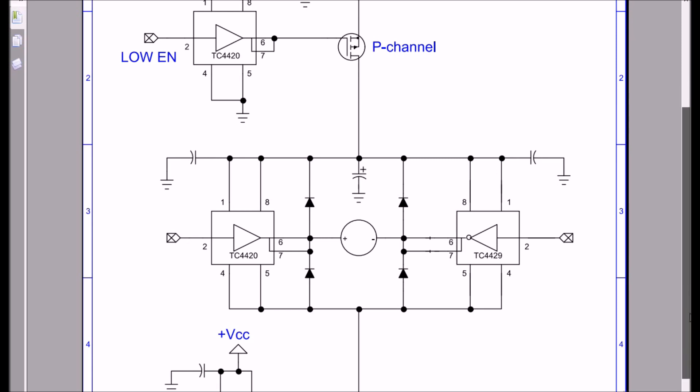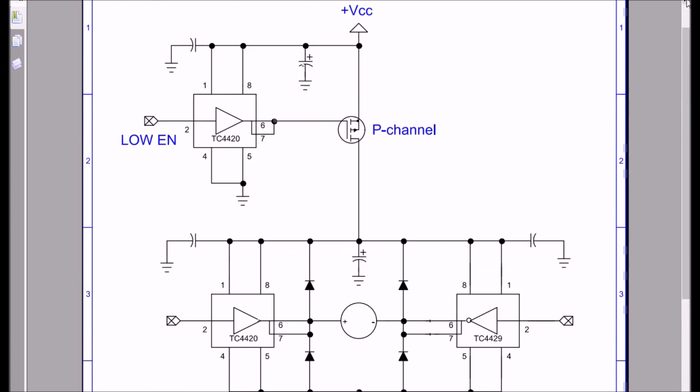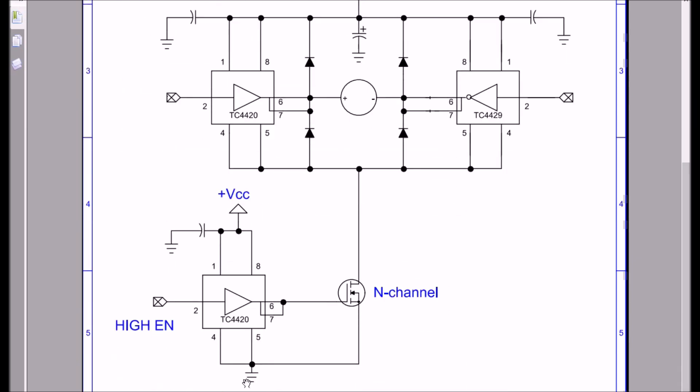What I did to control the speed is I used a TC4420 and an N-channel. I put it in the ground side of the little H-bridge configuration. Tied this side to VCC, and I pulse width modulated it down here.